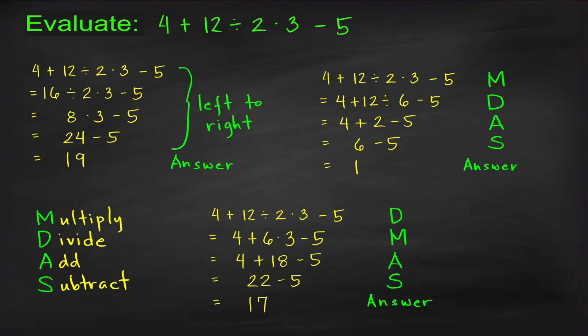This is the reason why the order of operations is very important — because it guarantees that we're going to obtain the same answer when we evaluate or simplify an expression. So which is the correct answer if we perform the correct order of operations? We'll know after we go over the correct order of operations.